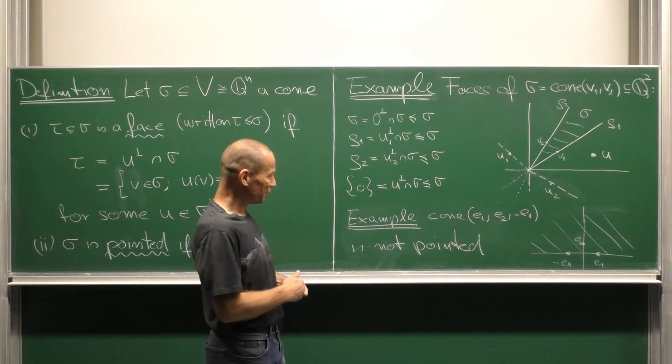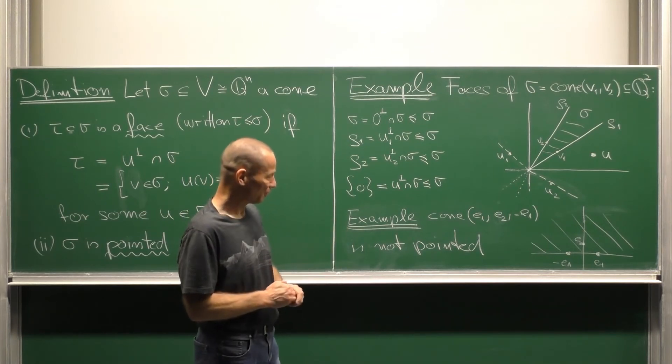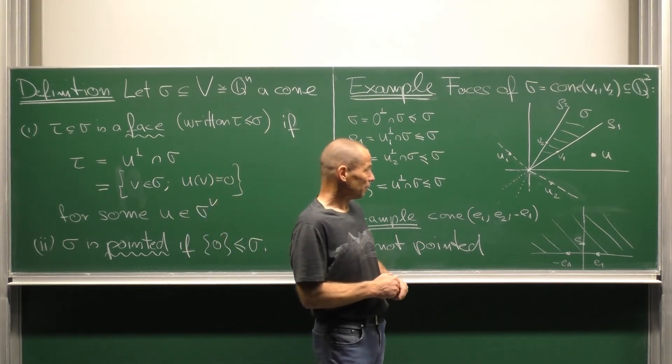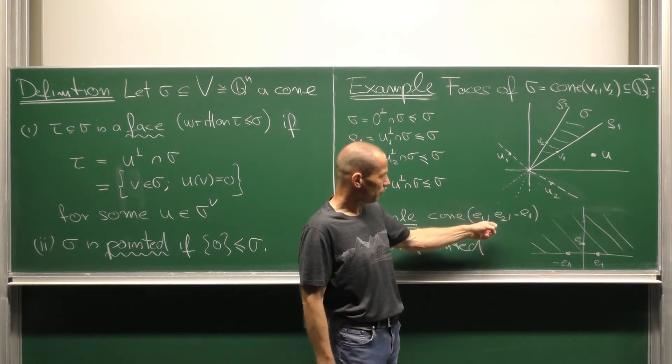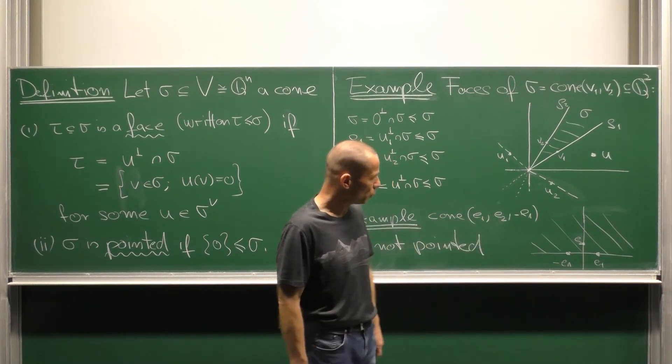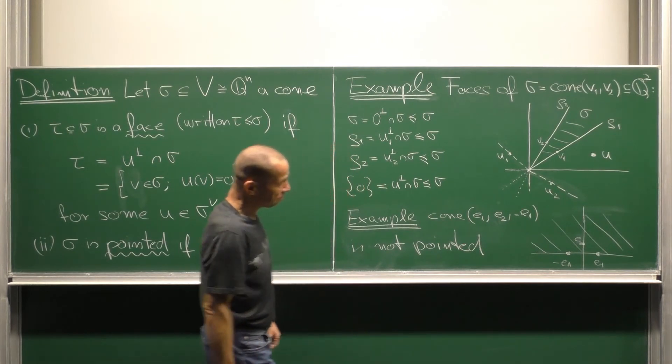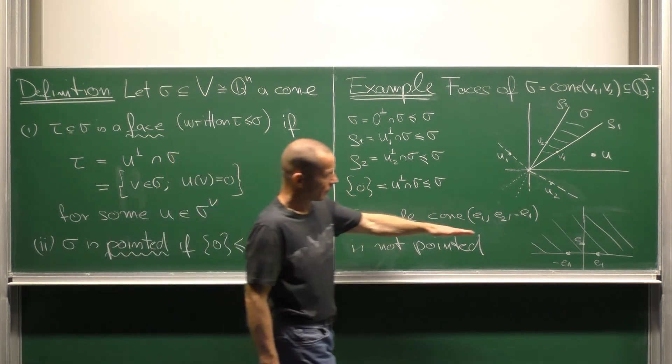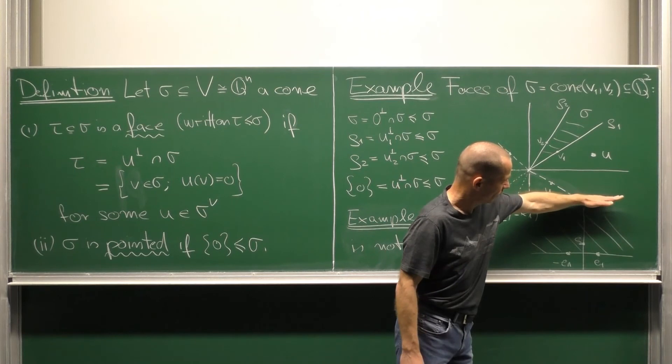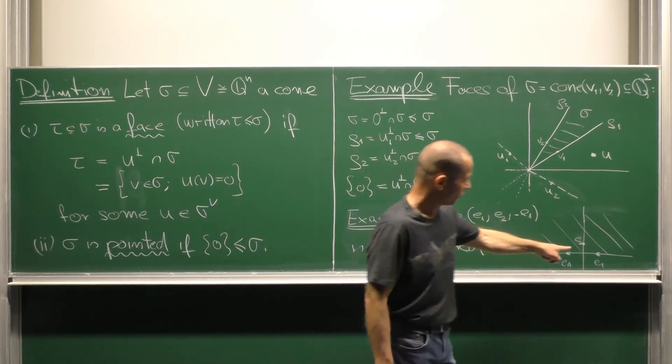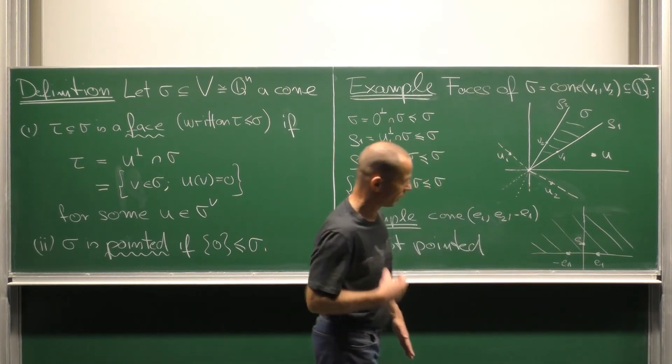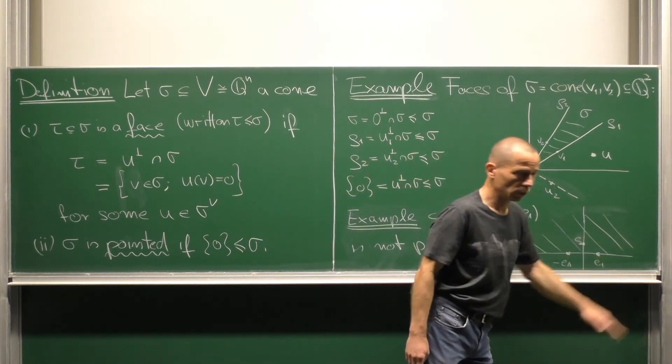This need not be the case in general. Here is an example of a non-pointed cone. Look at the cone generated by the first canonical basis vector e1, the second e2 and then minus e1. So we get the upper half space. And there is no chance to cut out the point zero by a linear form. Such a linear form always will vanish on the whole line.